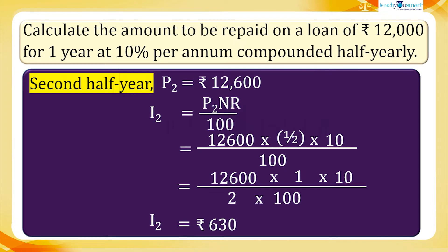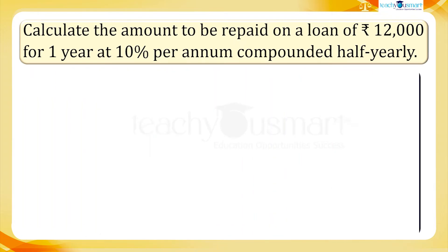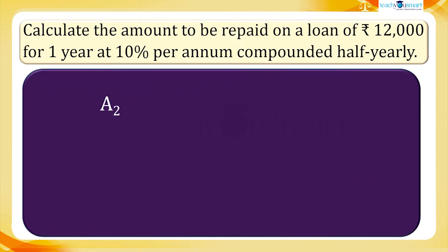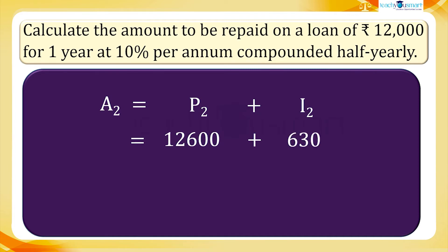The amount at the end of the second half year, A2 equals P2 plus I2, equals 12,600 rupees plus 630 rupees, equals 13,230 rupees.